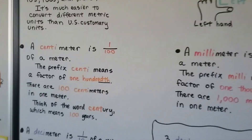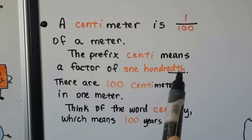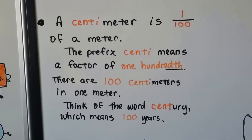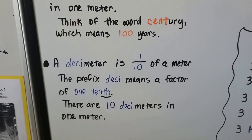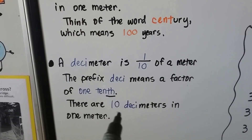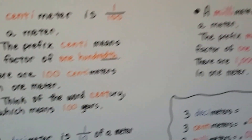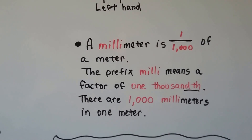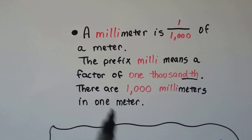A centimeter is one one-hundredth of a meter. The prefix centi means a factor of one-hundredth — see the 'th'? It's a fraction. There are 100 centimeters in one meter. Think of the word century — it has 100 years. A decimeter is one-tenth of a meter, and the prefix deci means a factor of one-tenth. There are ten decimeters in one meter. A millimeter is one-thousandth of a meter, and the prefix milli means a factor of one-thousandth. There are 1,000 millimeters in one meter.